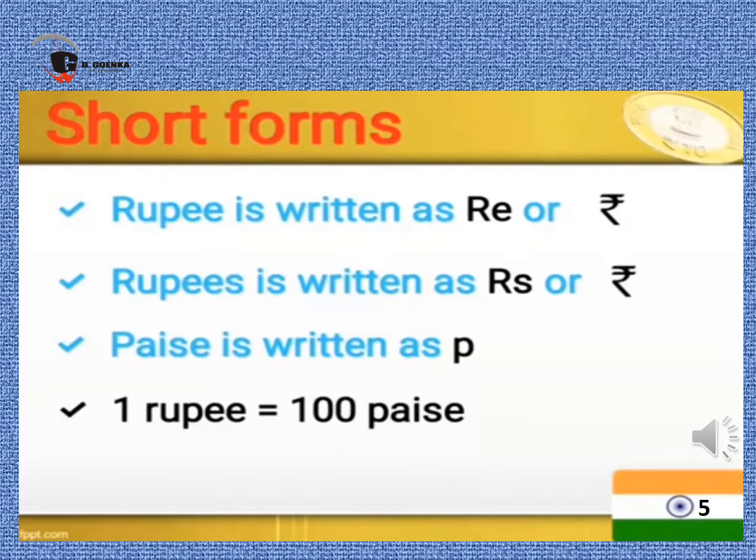Let's move forward towards the short forms. Rupee is written as RE, or you can draw the symbol of rupee. Rupees is written as RS, or you can draw the symbol of rupee. Paise is written as P, that is small p, and 1 rupee is equal to 100 paise.